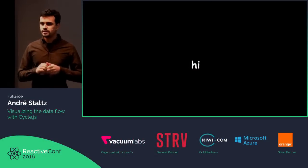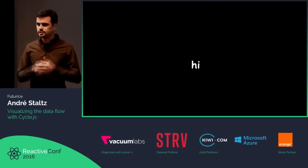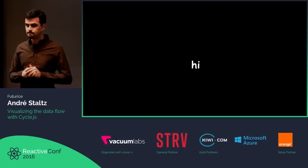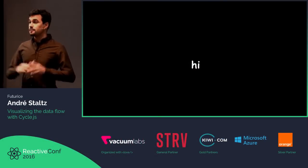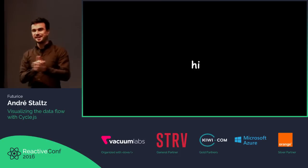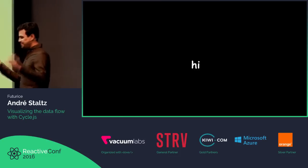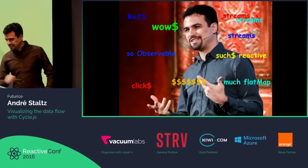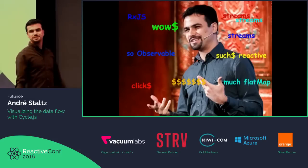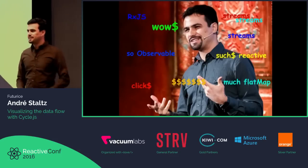How do you know when someone is using RxJS observables? They will tell you. So you don't need to ask them, and I use observables everywhere.